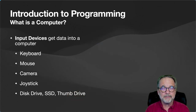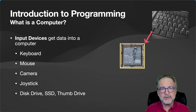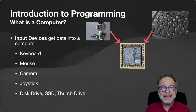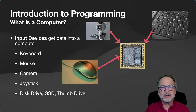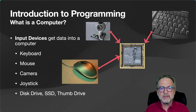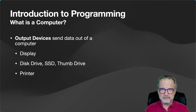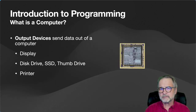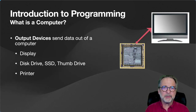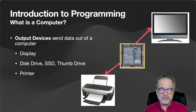The CPU takes inputs and creates outputs. Input devices include your keyboard, a camera like the one I'm using to record this video, your mouse which tells the CPU where the pointer should be displayed, a joystick or game controller, and disk drives, SSDs, and thumb drives — all secondary storage devices are also considered input devices. Some are also output devices. An output device sends data out of the computer to the user — your display, your printer, and millions of other output devices. That is what the CPU has to manage: the inputs and the outputs.